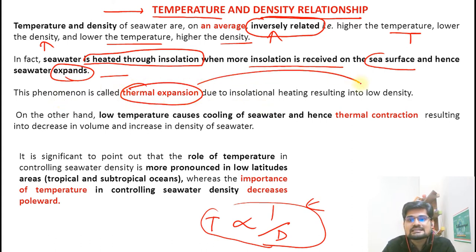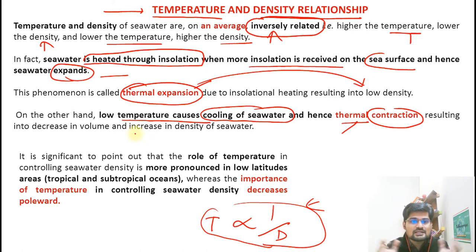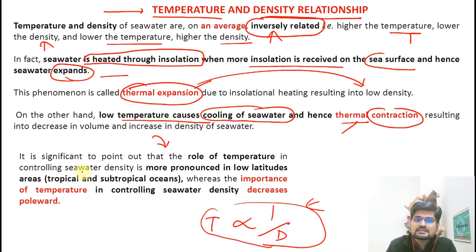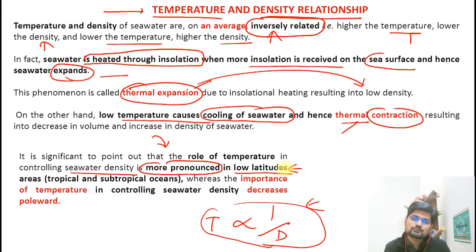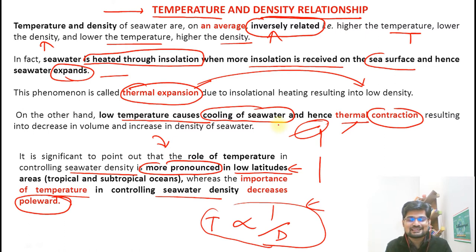Low temperature causes cooling of seawater and contraction, resulting in more density. The role of temperature in controlling seawater density is more pronounced in lower latitudes. The maximum tropical and subtropical seas receive more insolation, resulting in lesser dense water. Importantly, the importance of temperature in controlling seawater density decreases towards the poles, as temperature reduces and its importance in terms of density also reduces.